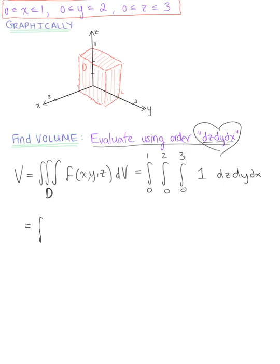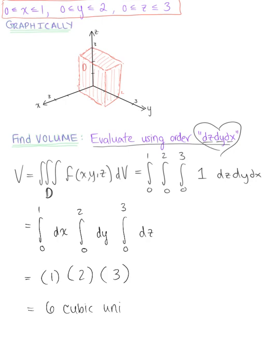This is the integral from 0 to 1 dx, multiplied by the integral from 0 to 2 dy, multiplied by the integral from 0 to 3 dz. We already know what these evaluate to. The integral from 0 to 1 leaves us with 1, from 0 to 2 with respect to y leaves us with 2, and from 0 to 3 leaves us with 3, giving us the volume of this box: 6 cubic units. This is our beautiful final answer.